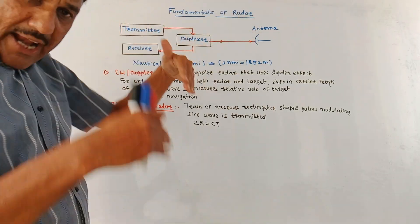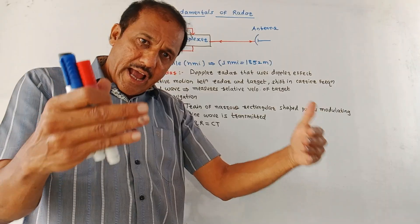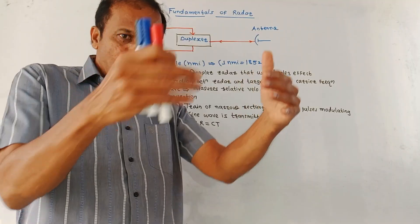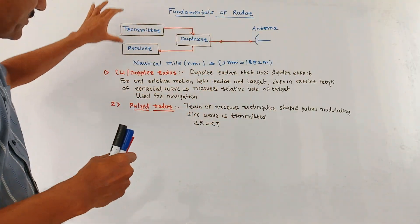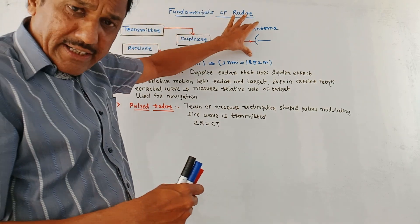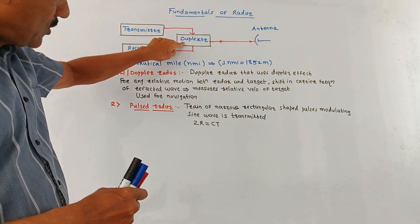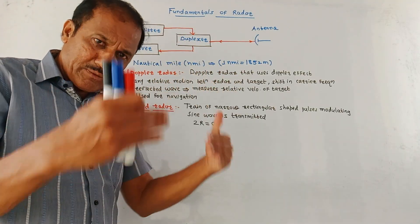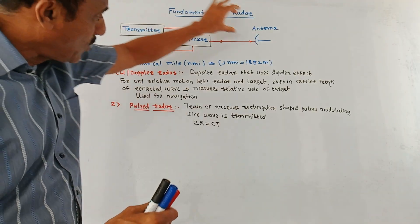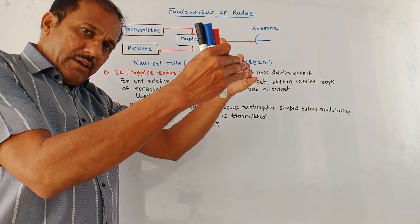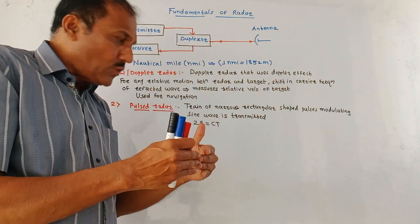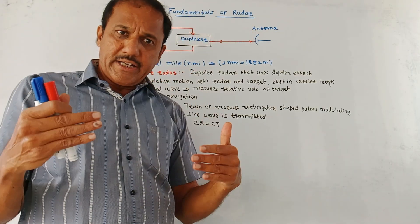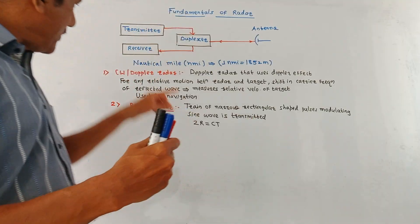A common antenna is used. The antenna continuously scans for the target, and whenever a target exists, the target causes echoes and those echoes are captured by the receiver section. Since a common antenna is used, one more block is shown called the duplexer. The function of this block is: whenever signals are transmitted, it connects the transmitter block to the antenna, and whenever echoes are received, this duplexer connects the antenna to the receiver block.